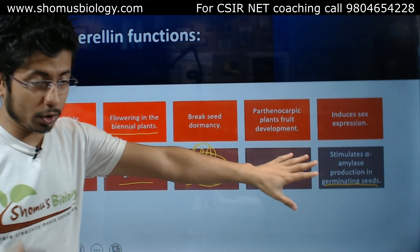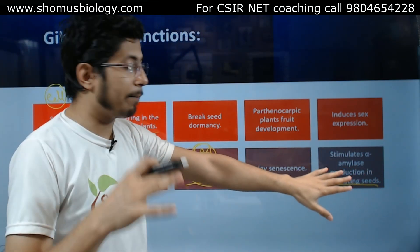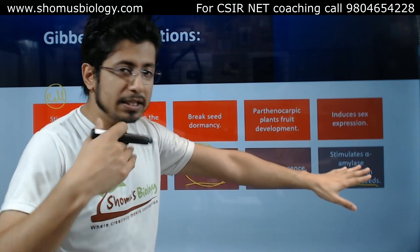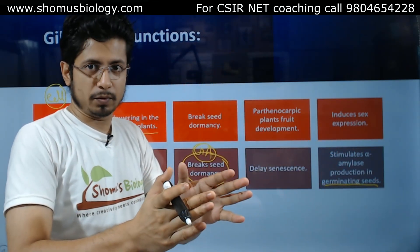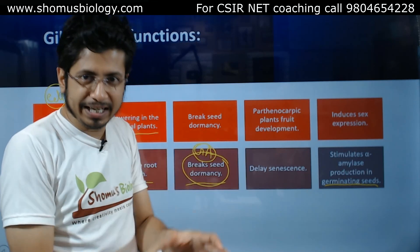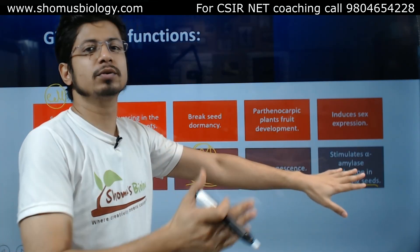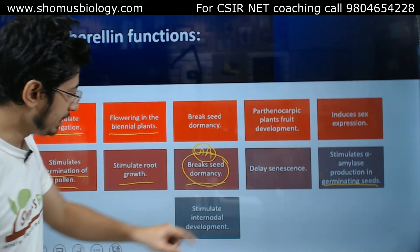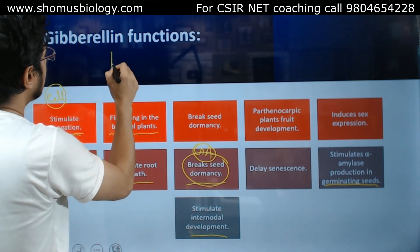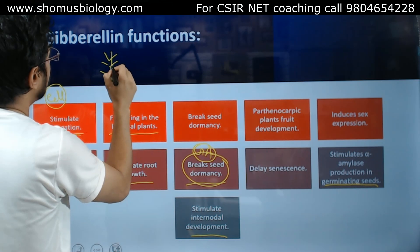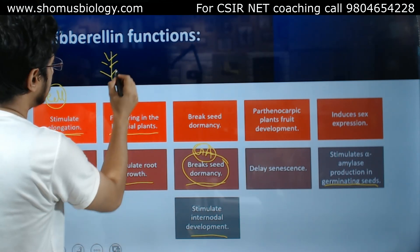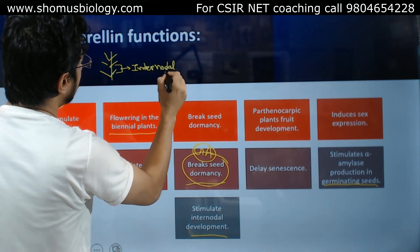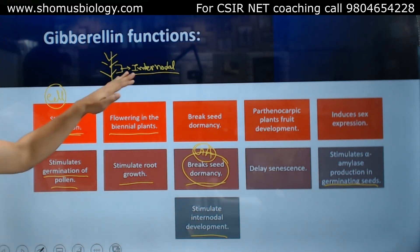Stimulating the production of alpha-amylase and many other enzymes during germination is a major role of gibberellin. Alpha-amylase degrades and breaks down the stored carbohydrate in the endosperm, providing nutrients to the developing embryo for growth. Gibberellin also stimulates internodal development. Looking at a plant, the region between nodes — the internodal section — is regulated by gibberellin.